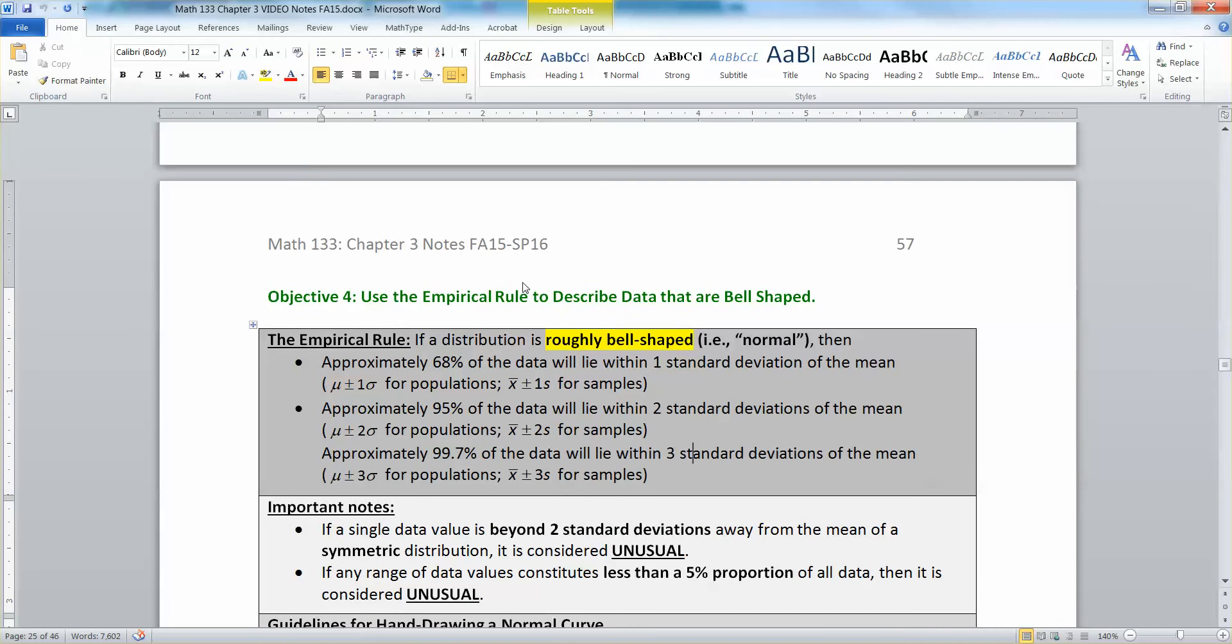Right here in Section 3.2, we learned about the empirical rule, which says that based off of data, what happens when a distribution is roughly normal or bell-shaped. There's that normal bell-shaped. Approximately 68% of the data will lie within one standard deviation of the mean, 95% within two standard deviations of the mean, and 99.7% within three standard deviations of the mean.